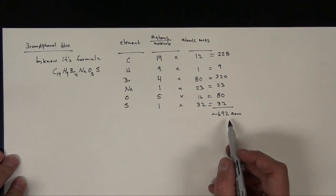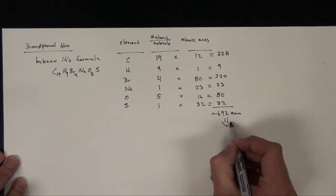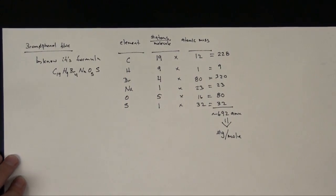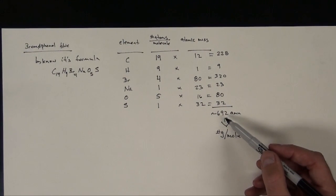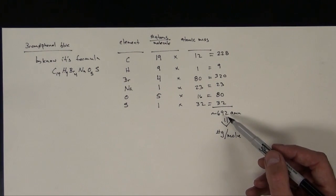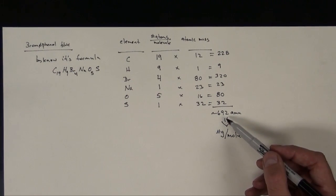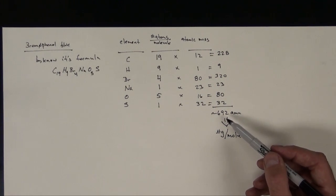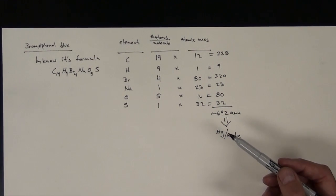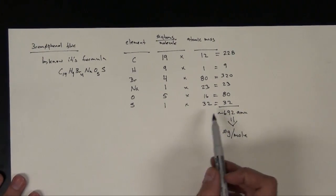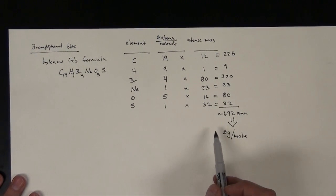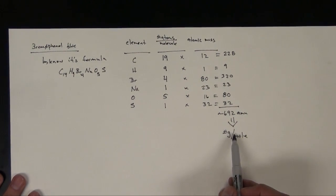Now remember, this is also equivalent to the number of grams per mole. So if I were to go to that balance, that analytical balance, and measured out 692 grams of this chemical, bromophenol blue, I would have 6.02 times 10 to the 23rd particles of bromophenol blue. Well, that's not what I did. So I need to figure out what I actually have in that mixture that I made. But what I do know is now how many grams it is per mole. So with that information, I can calculate how many moles my 0.144 grams was.